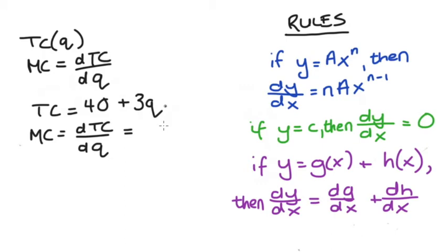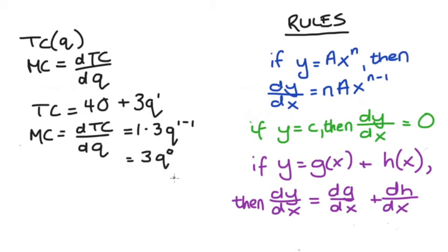The second term is interesting because I have 3q, where the variable doesn't have an explicit exponent. But a variable without an exponent is implicitly to the power of 1, so we can think of it as 3q to the power of 1. The derivative would then be: 1 (our n) out the front, times 3 (our a), times q to the power of 1 minus 1, which equals 0. Anything to the power of 0 equals 1 — this rule is often written as a⁰ = 1 for any number or variable a. So this whole derivative comes out as 3 times 1, which is just equal to 3.